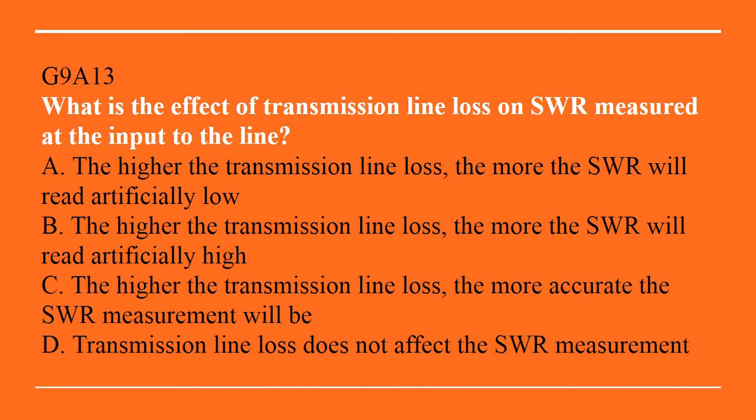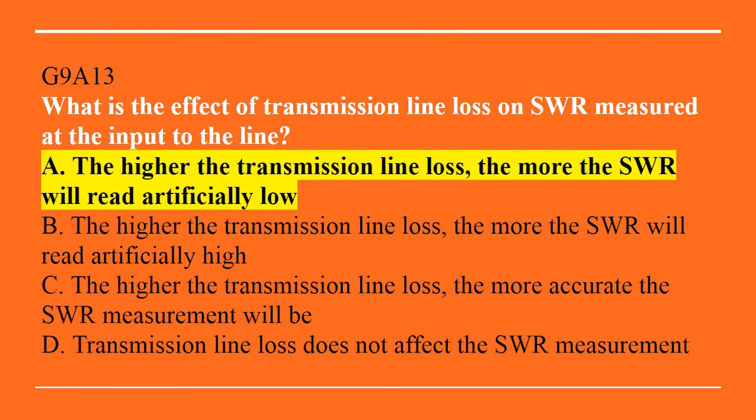G9A13: What is the effect of transmission line loss on SWR measured at the input to the line? A. The higher the transmission line loss, the more the SWR will read artificially low. B. The higher the transmission line loss, the more the SWR will read artificially high. C. The higher the transmission line loss, the more accurate the SWR measurement will be. Or D. Transmission line loss does not affect the SWR measurement. The answer is A — the higher the transmission line loss, the more the SWR will read artificially low.